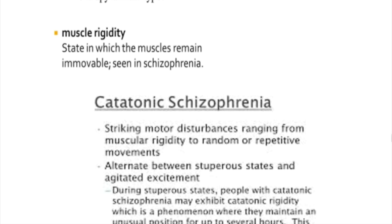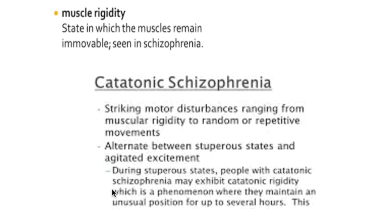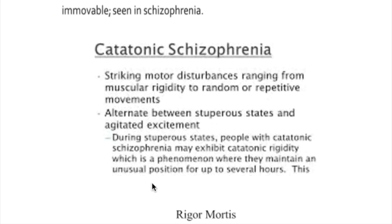In catatonic schizophrenia, the muscle remains immovable for hours. In the stuporous state of catatonic schizophrenia, the patient has rigidity where they maintain a position for up to hours.